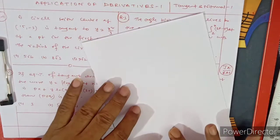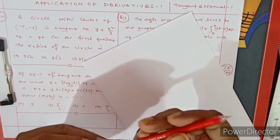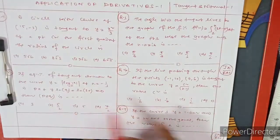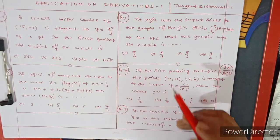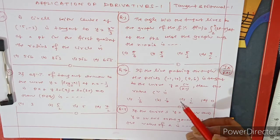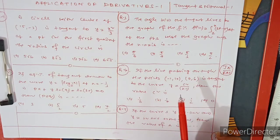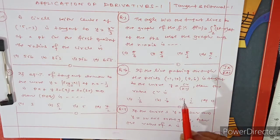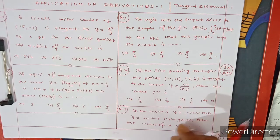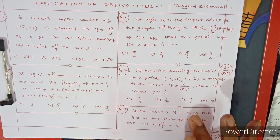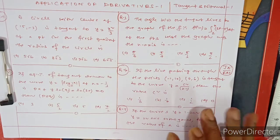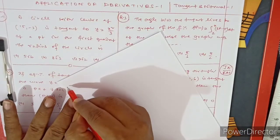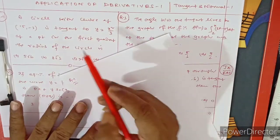Now we'll discuss these five questions. These five questions are very conceptual — step-by-step questions with high probability of appearing in the exam. Previous year JEE Advanced questions from tangent and normal have already been uploaded separately, so these are additional difficult conceptual problems.